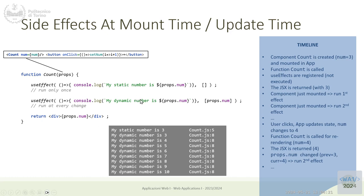Then we finish the update stage for this component until a new property changes and we start again: first we render, then we update. Remember that all these callbacks don't run every time, but when they run, they run after the return. I need to write them at the top because hooks should be the first statements, but they run at the very bottom, after the return.